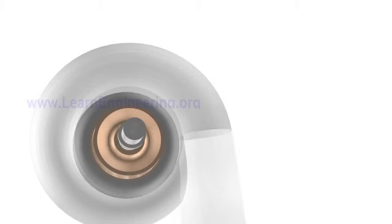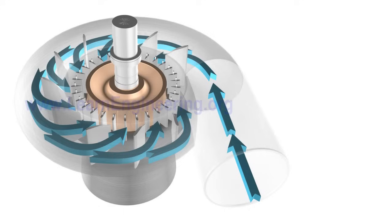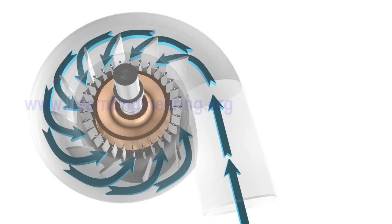Stay vanes and guide vanes are fitted at the entrance of the runner. The basic purpose of them is to convert one part of pressure energy to kinetic energy. Flow coming from the casing meets stay vanes, which are fixed. Stay vanes steer the flow towards the runner section, thus reducing swirl of inlet flow.